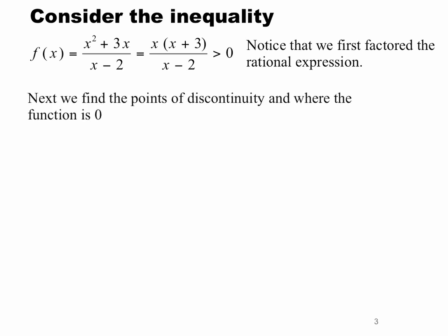Next we'll find the points of discontinuity and where the function is equal to 0 because these are going to be important points to look at. If we look at the denominator, we see that x minus 2 is equal to 0 when x is equal to 2. So this will be a place where that rational expression would be undefined, so that's the denominator equal to 0.